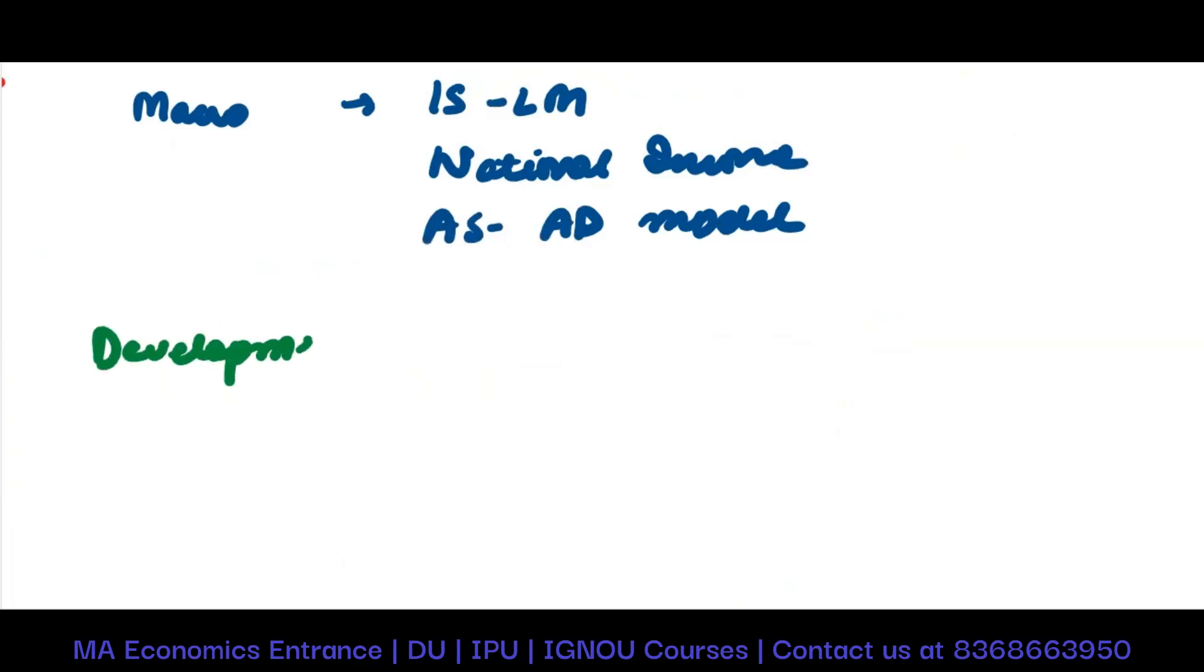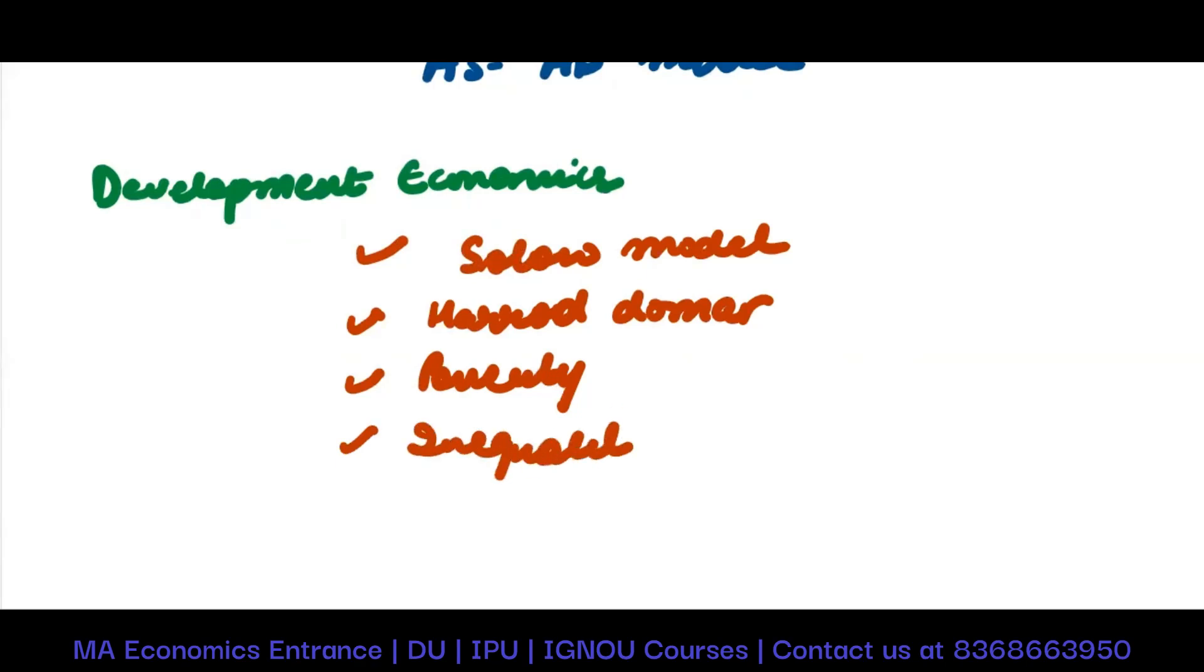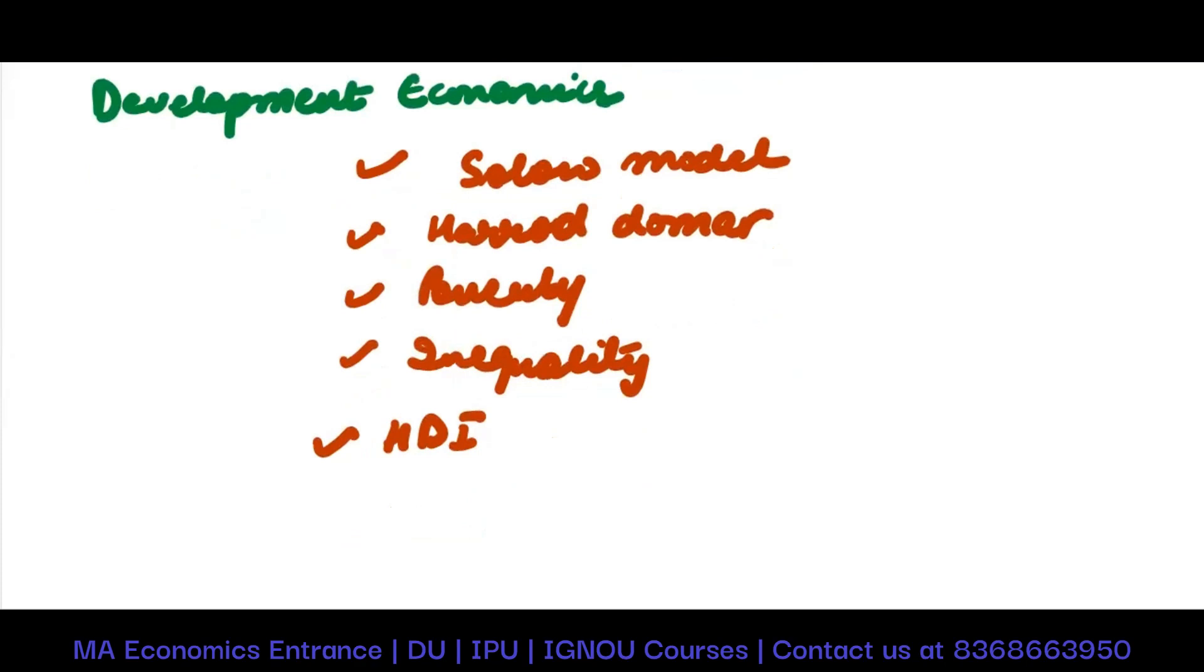Now let's talk about macroeconomics. In macro, you will be asked ISLM model, of course national income accounting, and you will be asked ASAD model. In IGIDR paper, development economics is super important. For development economics, you must focus on Solow model, Harrod-Domar model, poverty, inequality, human development index. These are very important topics. And finally, you must be focusing on the Lewis model.